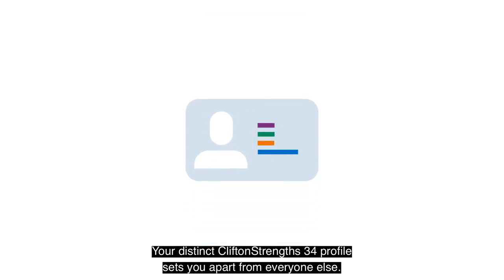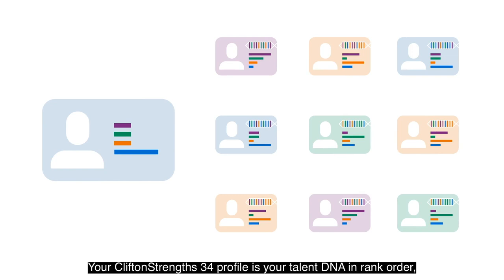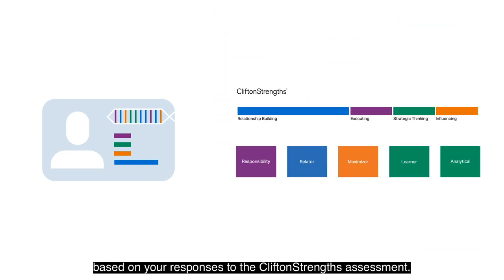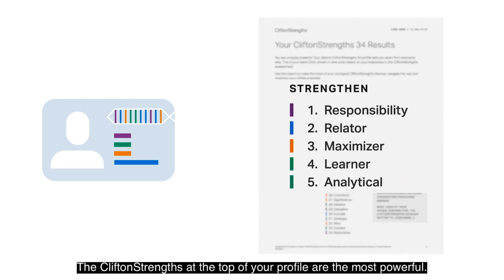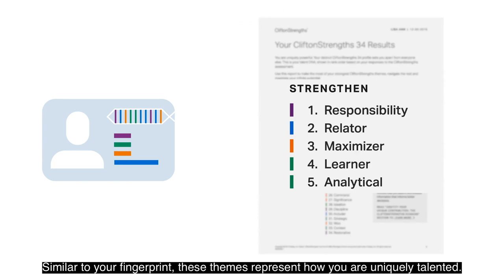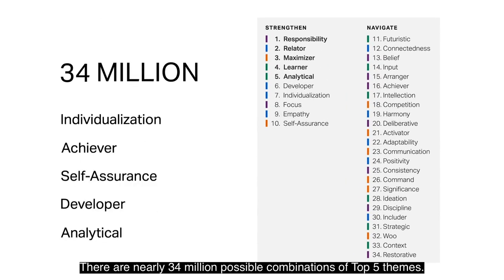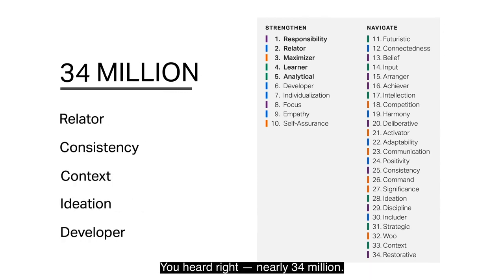Your distinct CliftonStrengths 34 profile sets you apart from everyone else. Your CliftonStrengths 34 profile is your talent DNA in rank order based on your responses to the CliftonStrengths assessment. The CliftonStrengths at the top of your profile are the most powerful. Similar to your fingerprint, these themes represent how you are uniquely talented. There are nearly 34 million possible combinations of top five themes.